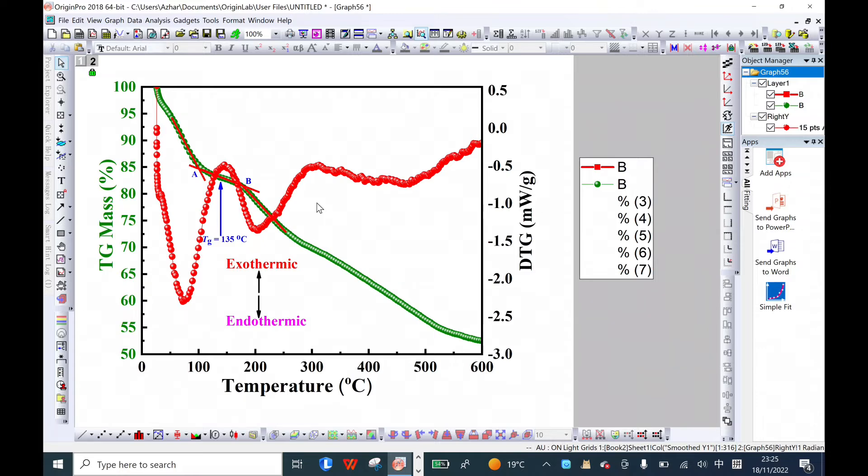Now, how to determine the glass transition temperature. This first peak is due to the evaporation, the removal of water molecules. For DTG, it is red. I should mention it in another color. This one is DTG and it looks like this.